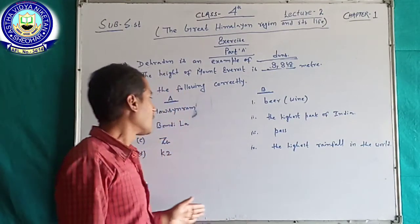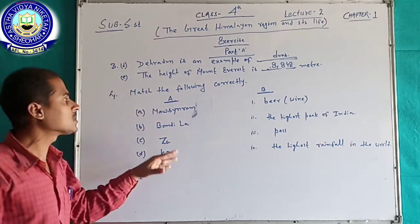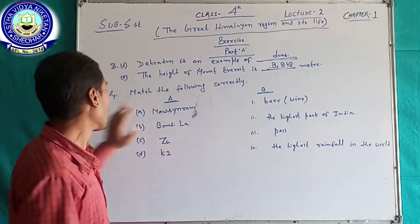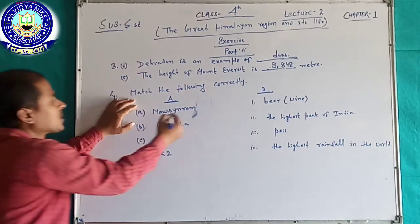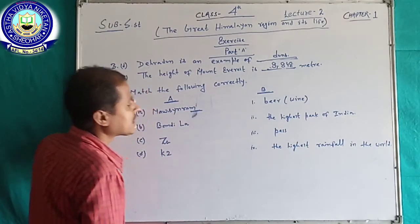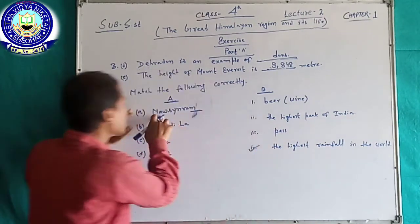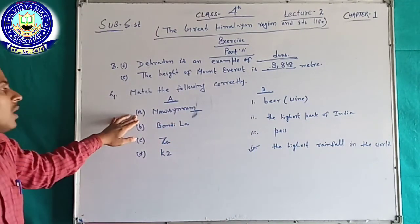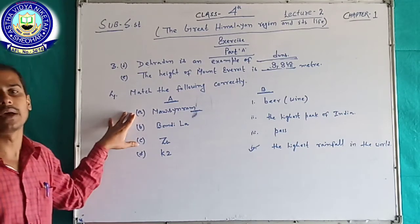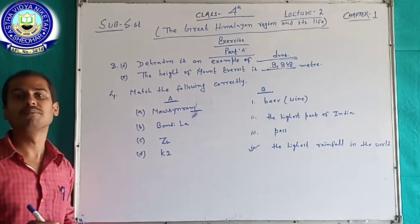Now your fourth question is match the following correctly. You have two sections, A and B, and you have to choose the correct options. First: Mawsynram — this region has the highest rainfall in the world, and this region is related to our India and comes from Meghalaya state.